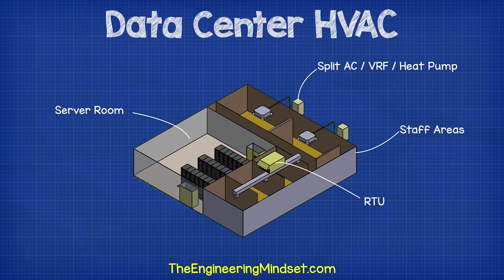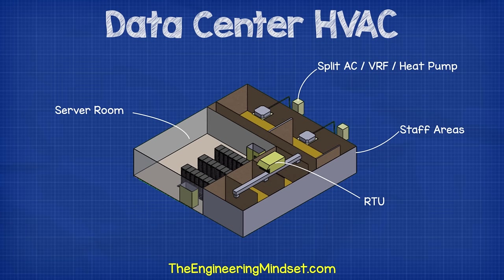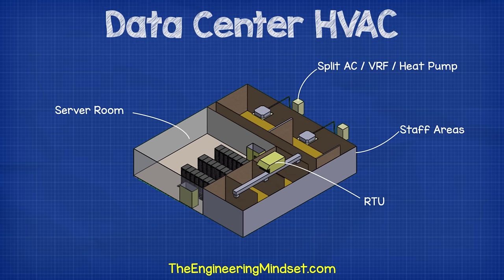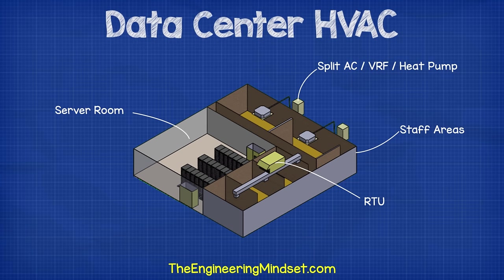The first part we'll briefly cover is the non-data hall areas. These are the areas where staff are normally located — the security guards, the engineers and technicians, etc. And these cover the areas of the offices, the toilets, the workshop and rest areas.